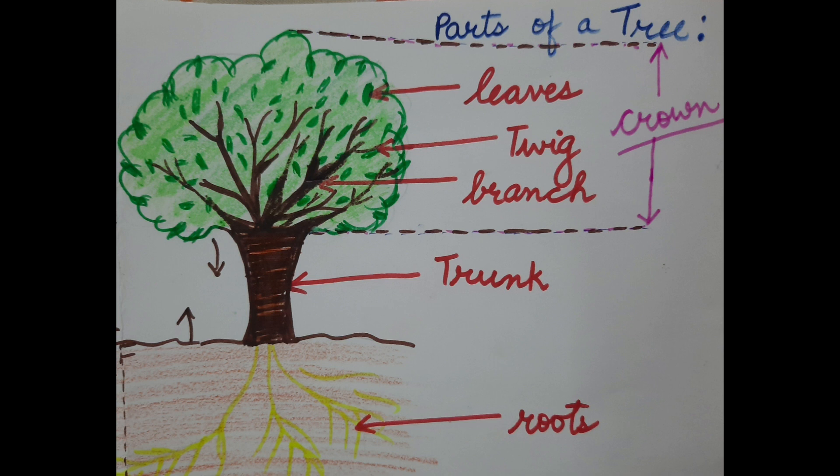Roots collect water and nutrients from the soil and play an important role in photosynthesis. They also store the extra water and nutrients to support the plant in tough days when there is scarcity of water and nutrients.